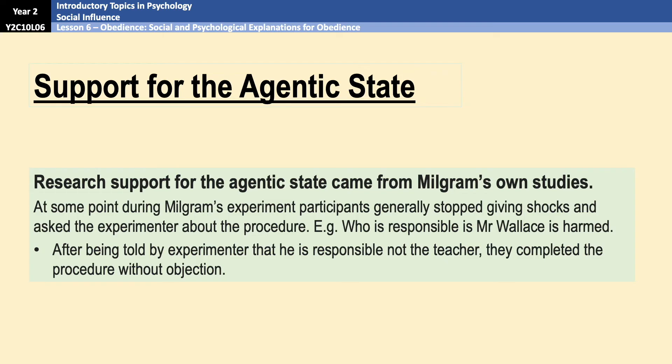Starting with research support, which comes from Milgram's own research: as a general rule, participants would stop during the experiment and ask questions about the procedure — checking whether the learner would be all right and asking who would be responsible if the learner was harmed. After being told by the experimenter that he would be responsible for any harm rather than the teacher, participants quickly continued without further objection. This shows that once participants perceived they were no longer responsible for the harm they were causing, they acted more easily as the experimenter's agent and were more willing to be destructive in their actions.